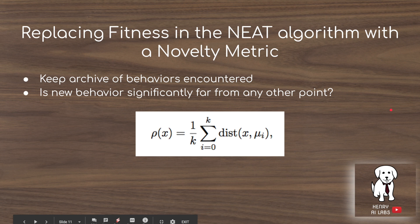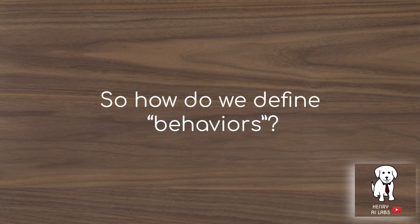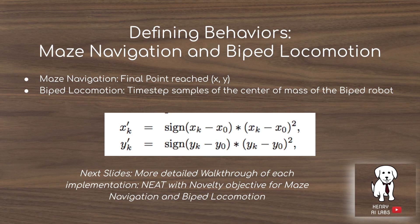The key idea is to replace the fitness evaluation in NEAT with a novelty metric. This is done by keeping an archive of behaviors encountered and then using a nearest-neighbor computation to determine if a new behavior is significantly far from any other behavior in the archive. A key question in the paper is: how do we define behaviors? In maze navigation, behavior is defined as the final xy coordinate reached by the agent. In ablation studies, this is extended to the full trajectory — sampling five different xy pairs taken during the trip. In biped locomotion, behavior is defined by sampling the center of mass of the robot throughout the 15 seconds.